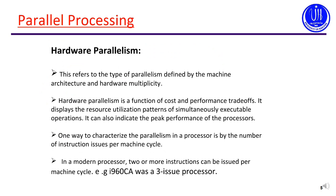Hardware parallelism refers to types of parallelism defined by machine architecture and hardware multiplicity. Hardware parallelism is a function of cost and performance — it displays resource utilization patterns simultaneously. The main concept is that hardware parallelism is achieved through hardware architecture and its multiplicity. For example, a 3-issue processor can perform 3 different types of tasks at the same time — this is an example of hardware performing more than one task simultaneously.